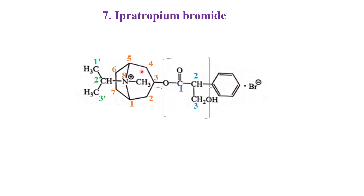In the first carbon of propanoate it is connected with one bicyclic ring. That bicyclic ring is having methyl in the 8 position and also isopropyl. Instead of writing isopropyl we can write propan-2-yl. So here that is why it is 8-methyl, 8-isopropyl or 8-propan-2-yl and this is 8-azonia. Azonia refers to a quaternary nitrogen.